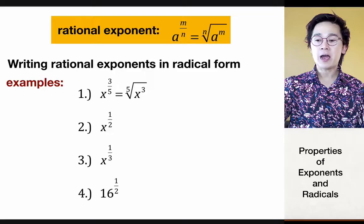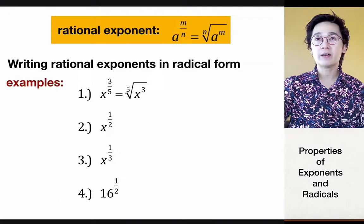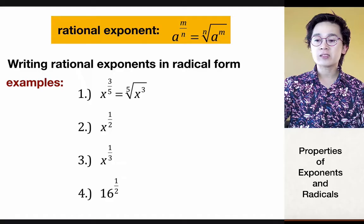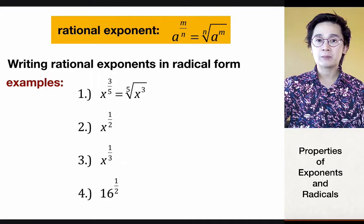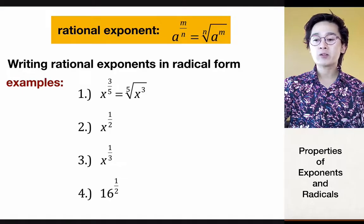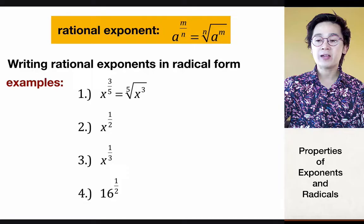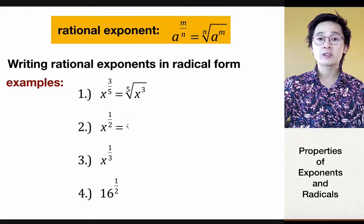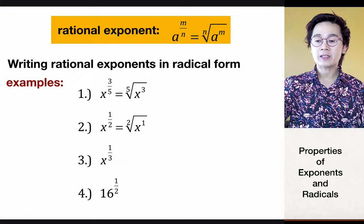What helps me remember the rational exponent rule: the denominator of my rational exponent will always be the root of my radical. So every time I see the denominator, I know it goes outside my radical, and the numerator goes inside. Applying that to x raised to 1 half: the denominator 2 is outside the root, and x is raised to 1, giving us the second root of x to the first power.